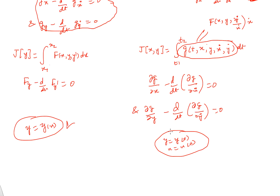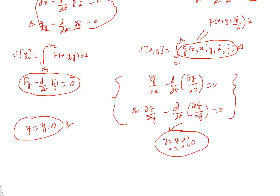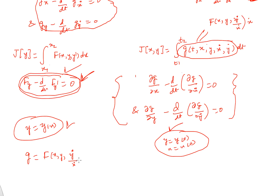We know these two representations describe the same curves. If a curve satisfies the original Euler's equation, it should also satisfy this set of equations in parametric form. If we can verify that, then we can always use these as the Euler's equations whenever admissible curves are given in parametric form. All we need to verify is: whenever f_y - d/dx(f_{y'}) = 0, the two parametric Euler's equations g_x - d/dt(g_ẋ) = 0 and g_y - d/dt(g_ẏ) = 0 are also satisfied.